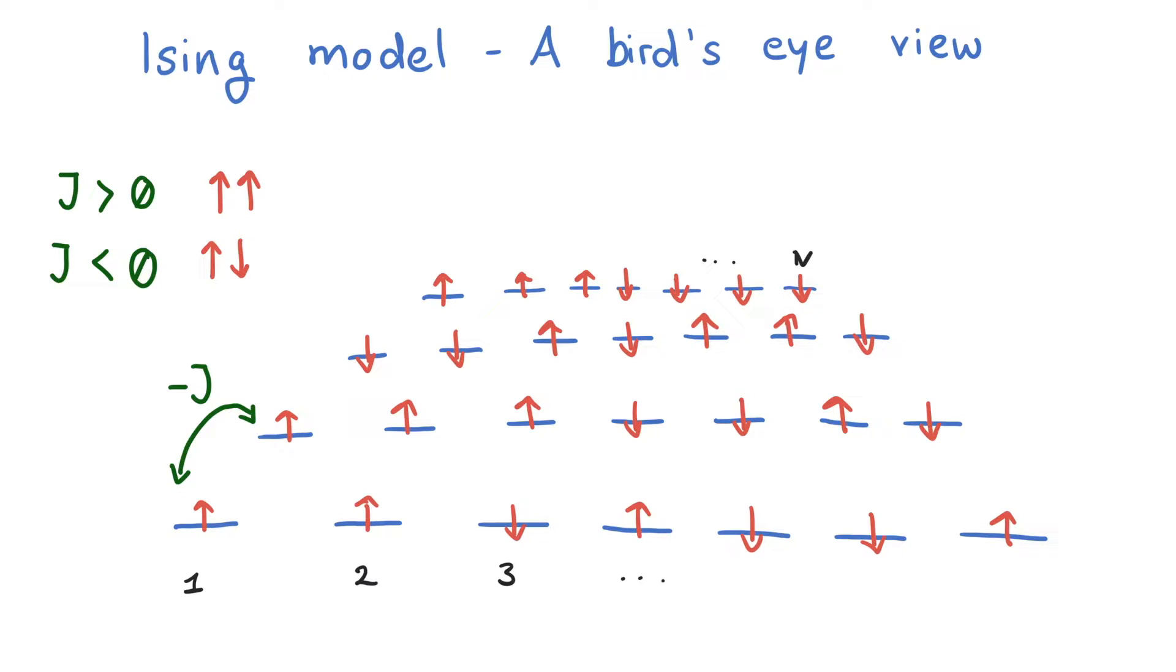Additionally, we could think of a term to manipulate the state at each site individually. In the case of localized spins, this can be achieved by an external magnetic field. For thorough discussion, check out our videos on non-interacting spins.